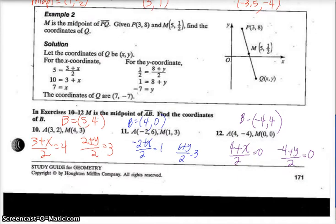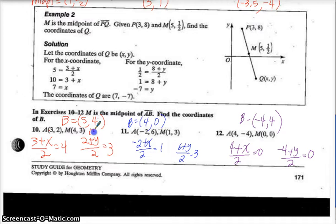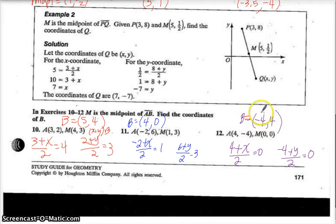On the bottom were the trickier ones where I give you a midpoint and an endpoint and you have to find the other endpoint. You take endpoint plus the unknown endpoint divided by 2 to get the midpoint. So B was unknown — multiply by 2 to get 8, subtract 3 to get 5. Set up 2 plus y divided by 2 equals 3, then get y equals 4. Number 11, the other endpoint B was 4, 0. Number 12, the other endpoint B was negative 4, 4. If you have questions, ask me in class.